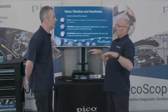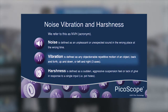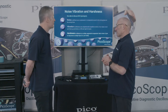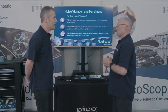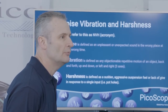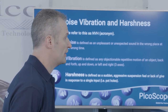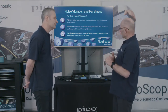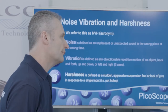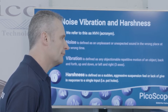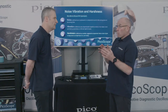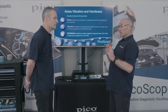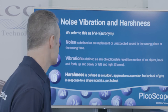Vibration is defined as an objectionable repetitive motion of an object — either fore and aft, up and down, or left and right lateral — the three axes of vibration. Think of a tyre with excessive lateral runout; that would affect the vehicle in a lateral direction and we can measure that vibration in that axis only. Noise can be a singular event whereas vibration is repetitive — it has frequency and amplitude, both of which can change as you drive the vehicle.